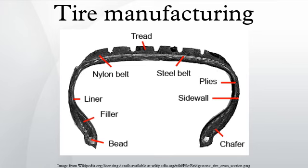Splices that are too heavy or non-symmetrical will generate defects in force variation, balance, or bulge parameters. Splices that are too light or open can lead to visual defects and in some cases tire failure. The final product of the tire building machine process is called a green tire, where green refers to the uncured state.